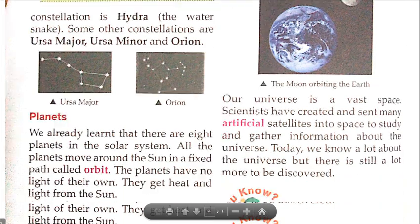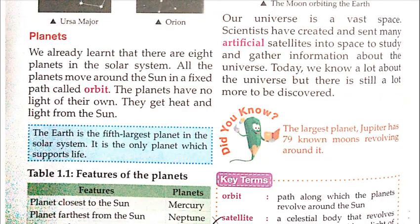There are 8 planets in the solar system. All planets move around the sun in a fixed path called an orbit. The planets have no light of their own — they get heat and light from the sun. Any planet needs light and heat to support life.